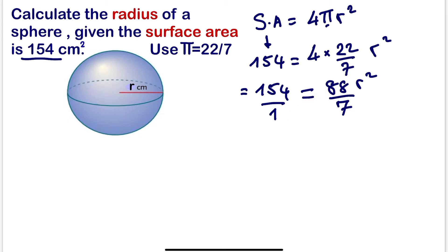So if we cross multiply 1 times this will give us 88r² should be equals to this than this. We are going to have 154 times 7.